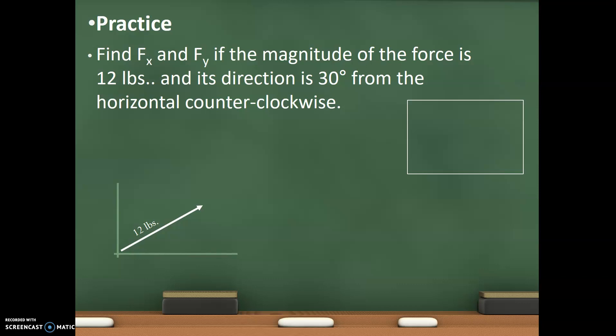So let's do a practice problem. Find the f sub x and f sub y if the magnitude of the force is 12 pounds and its direction is 30 degrees from the horizontal. So I have to draw my 30 degrees. I have my force vector going into 12. So we have our trig functions. Sine is opposite over hypotenuse and cosine is adjacent over hypotenuse. I'm going to use the cosine first to find the x component.